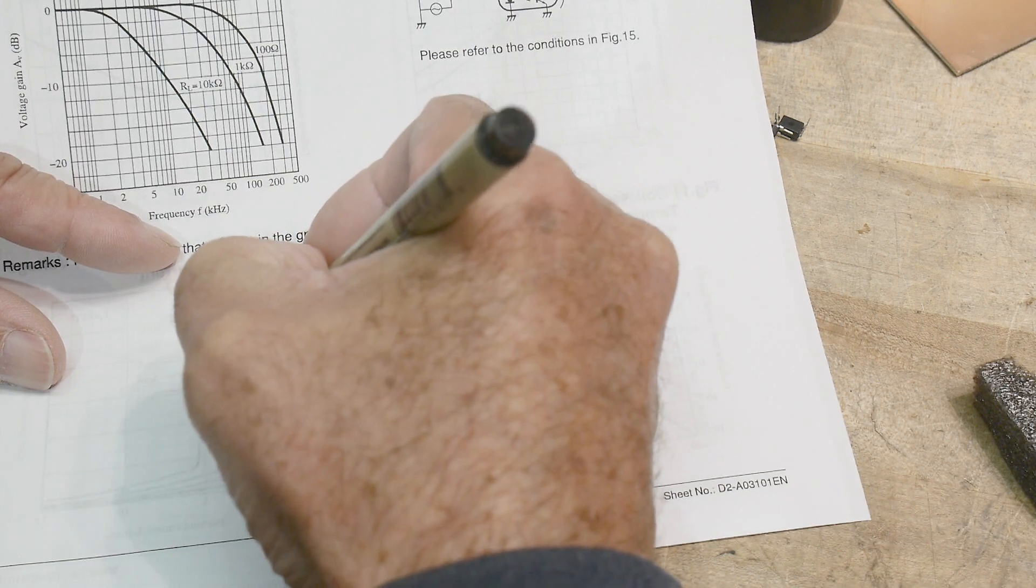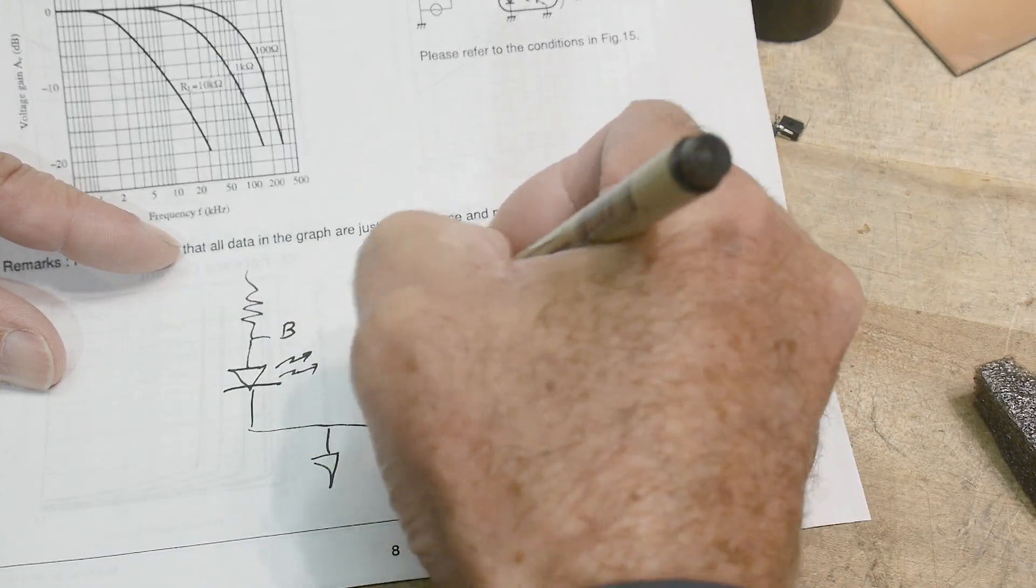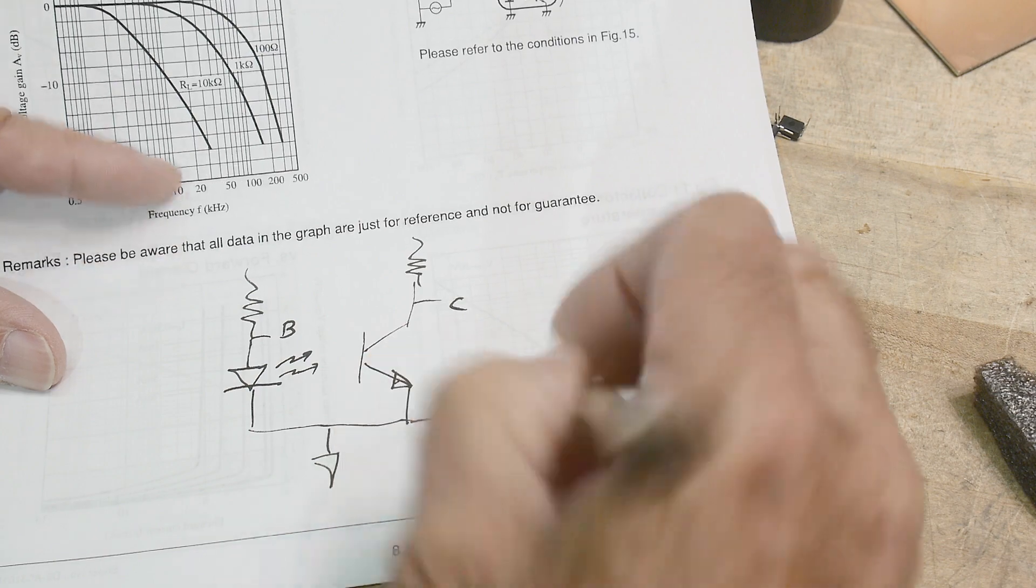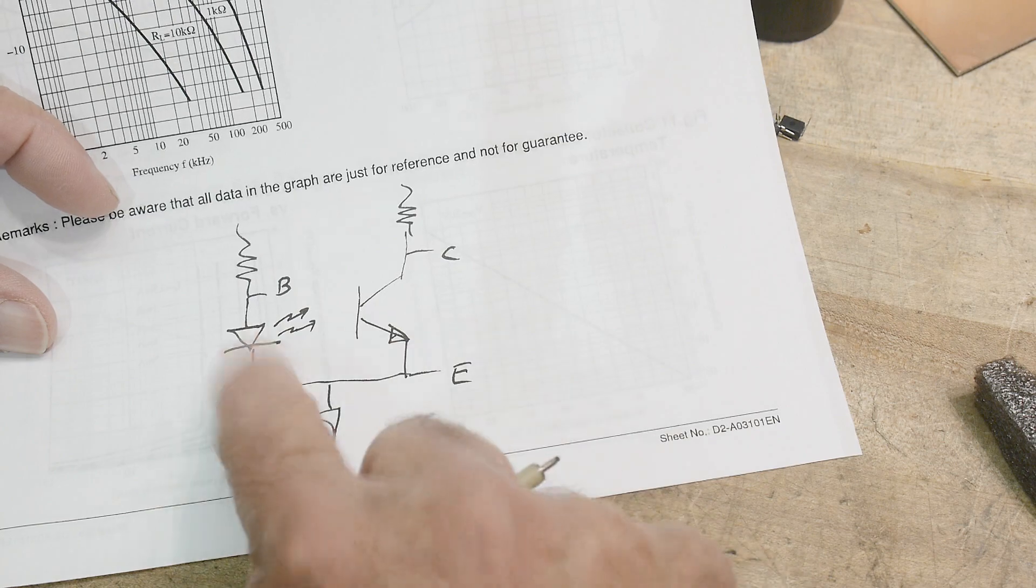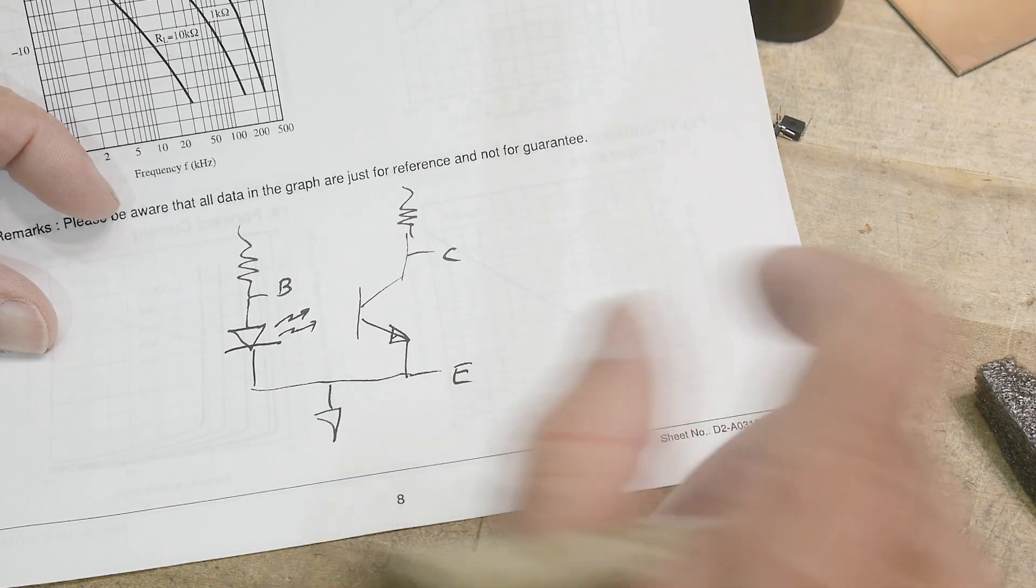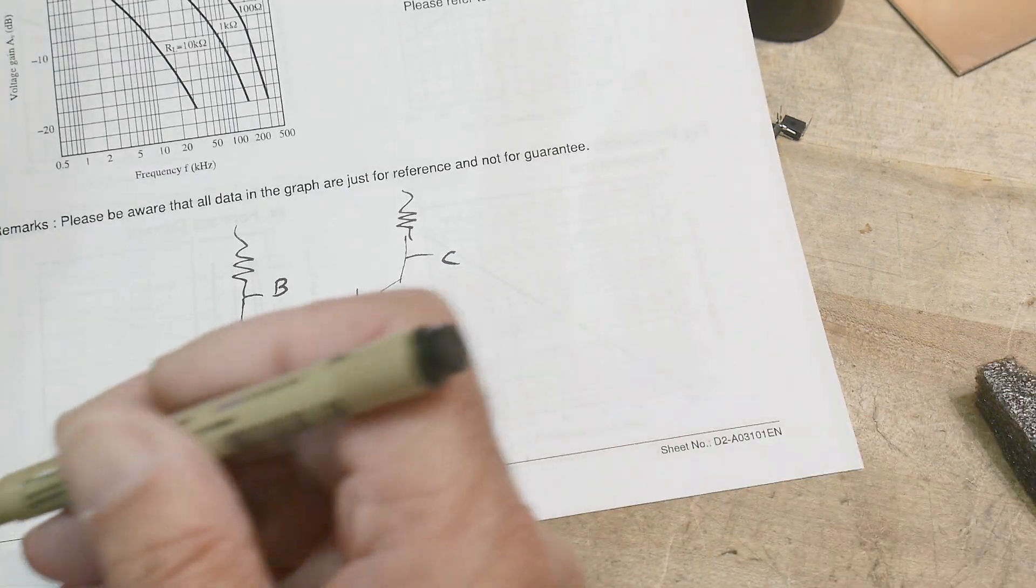We're going to connect this to base. We're going to connect this to collector. And we're going to connect this to emitter. And it should look like a transistor. We'll need to put in milliamps instead of microamps, but yeah, it should look like a transistor. So let's go do that.